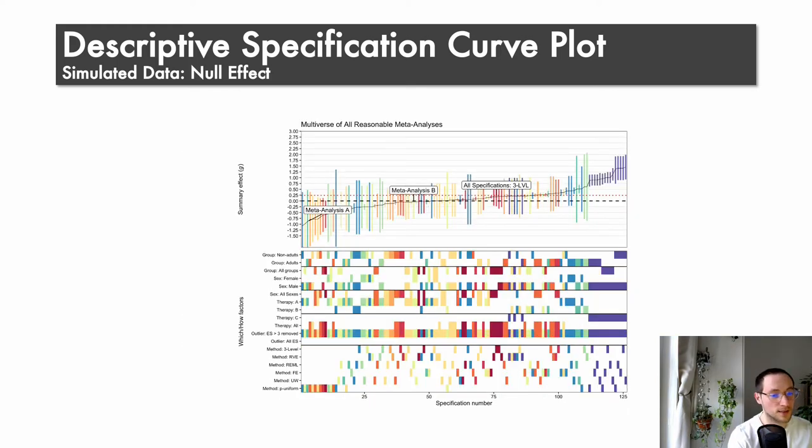And here you can see the same plot but simulated under a null effect. So all those confidence intervals actually cross the null line. So those meta-analyses would not be statistically significant and report quite small effect sizes. But here you have some outliers that are quite large in comparison. So it can be helpful to look at the descriptive specification curve to see how the overall evidence looks.